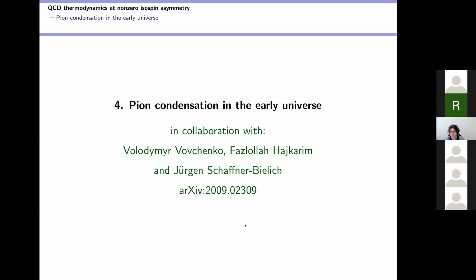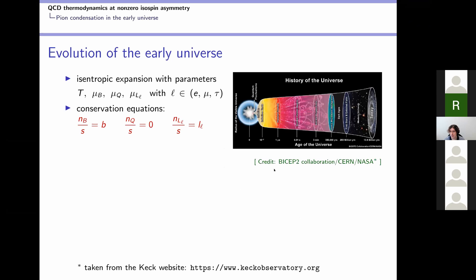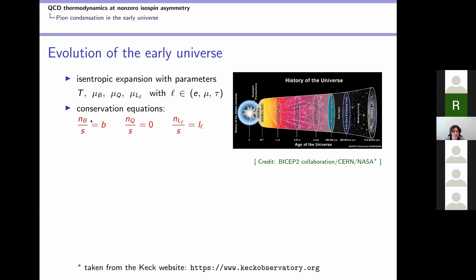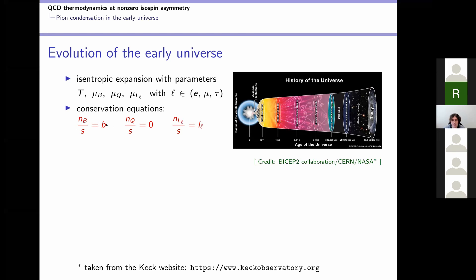Let me now come to this possibility that the early universe might have passed through a phase with pion condensation. This is work done in collaboration with Volodya and others, and we have recently published a paper on this. We want to investigate the evolution of the early universe in the QCD-dominated era. In this era, the universe undergoes an isentropic expansion, where the trajectory in parameter space is governed by conservation equations for the baryon density, charge density, and lepton densities, all normalized by the entropy density. On the right-hand side we have the baryon asymmetry, lepton flavor asymmetries, and a charge asymmetry constrained to be zero.